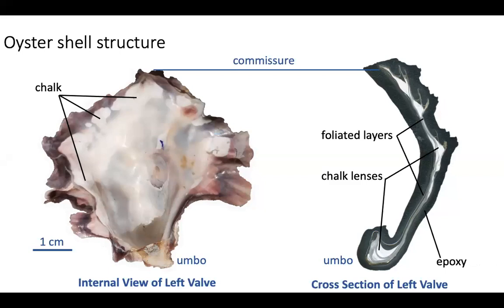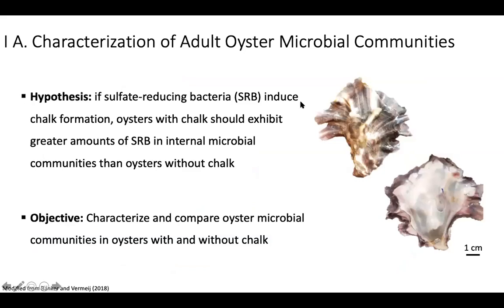On the left is an internal view of the left valve of an adult oyster. You can see chalky deposits are very conspicuous — these white opaque structures — along with the umbo, which is the oldest part of the shell, and the commissure, which is the growing margin. On the right is a cross section: the gray translucent layers are the shell folia, and the opaque chalky areas are chalky deposits. The chalk is interspersed all throughout the shell — you might even say these oysters are chalk full of calcite.